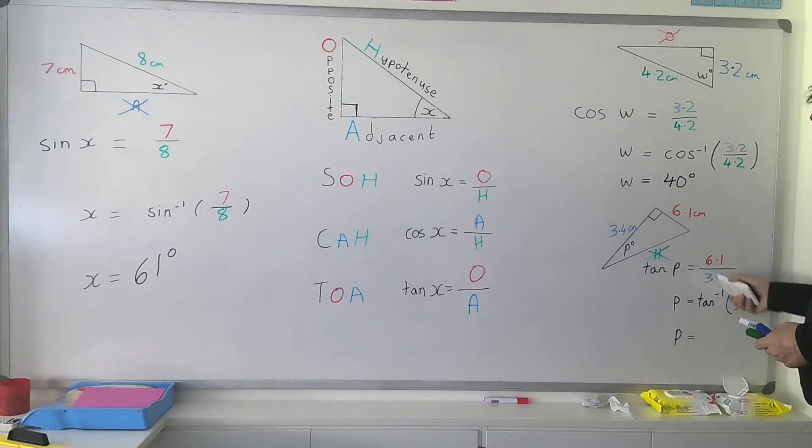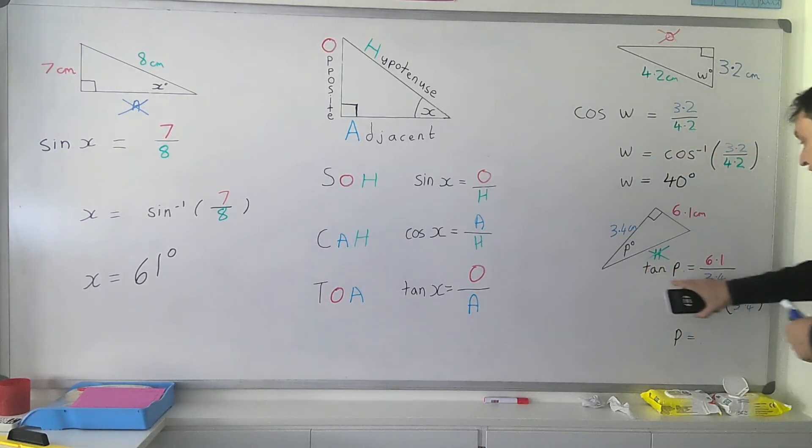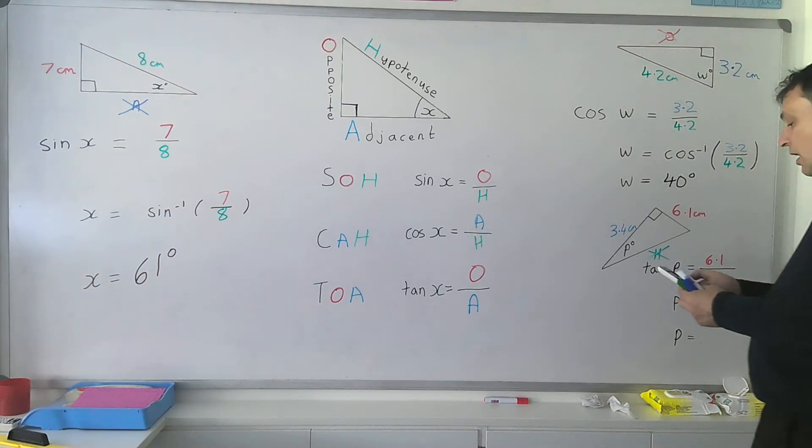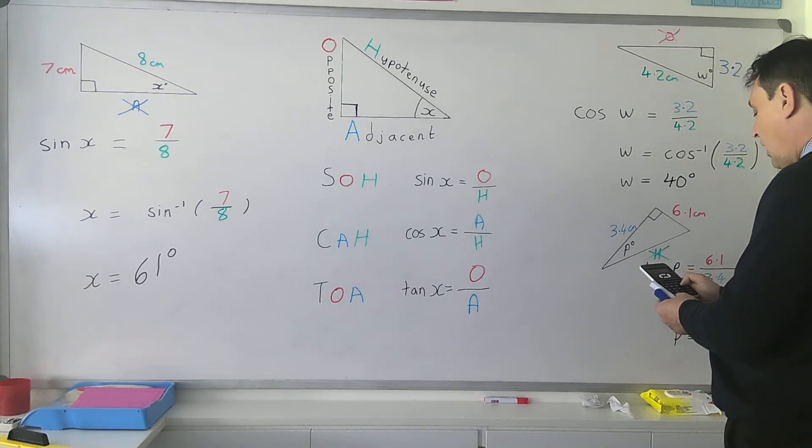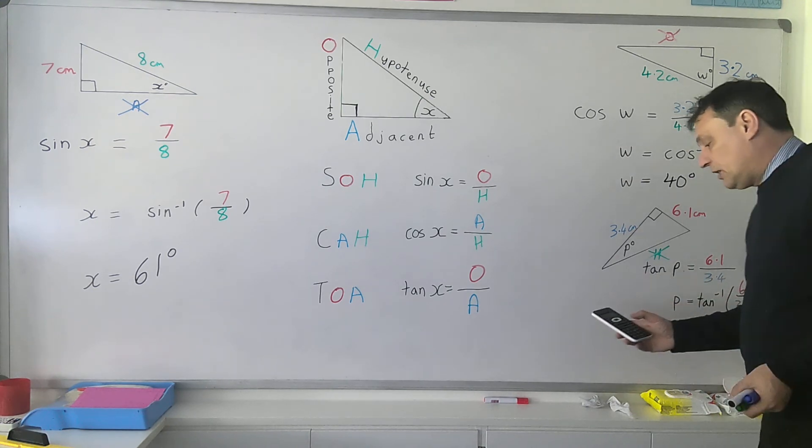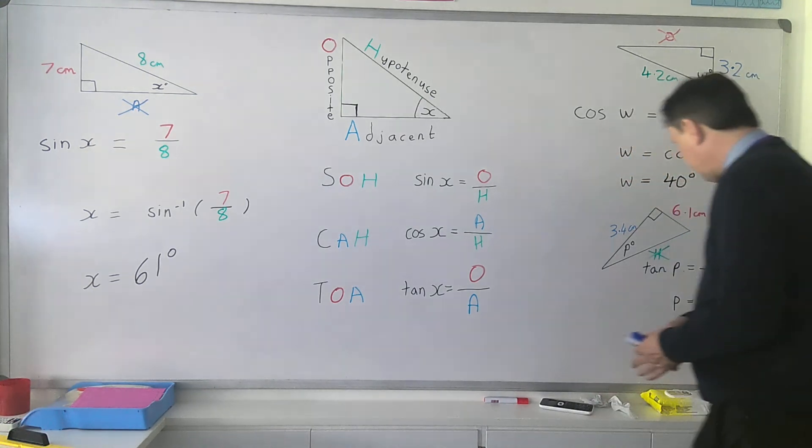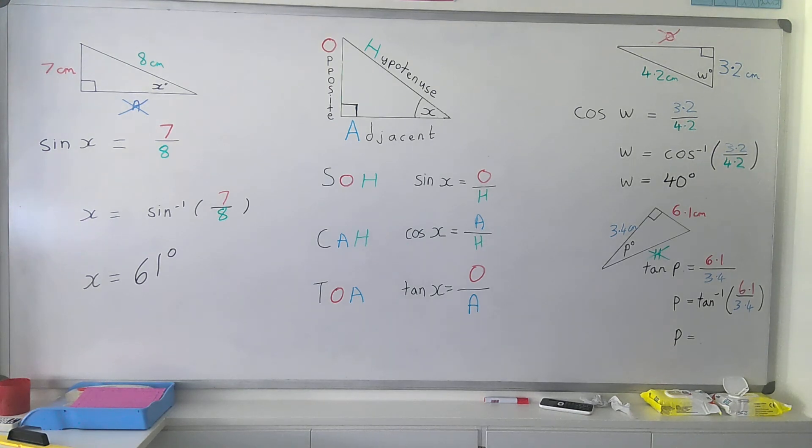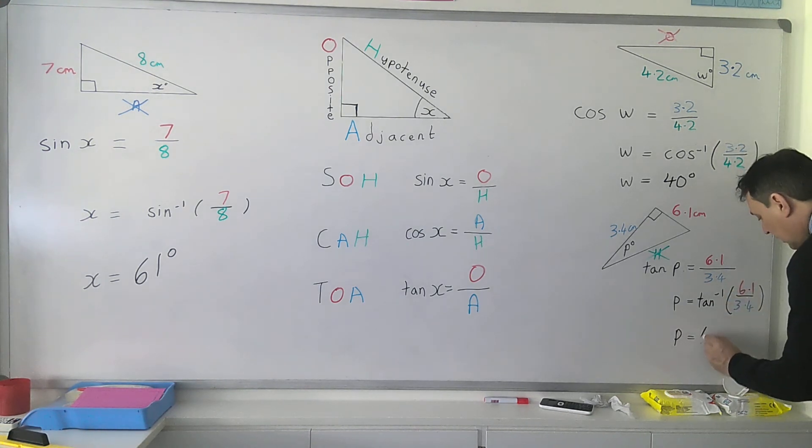6.1, opposite side, adjacent side 3.4, substituted into the equation. Back to our calculator again. Shift, tan to the minus 1 comes up, open the bracket, 6.1 divided by 3.4, shut the bracket, equals 60.86 degrees. That's going to come out to be 61 degrees as the answer.